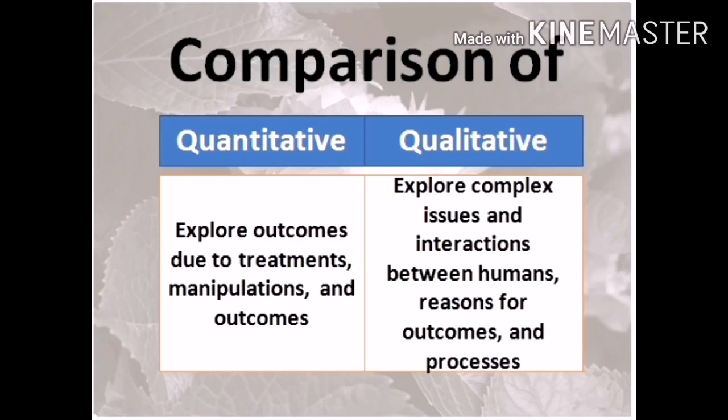Furthermore, in qualitative research, we look into the reasons for outcomes and processes. The researcher checks what is happening — why does this phenomenon occur? What is it all about? From this, a law or theory is developed if there is a new discovery about a certain phenomenon occurring in the study.